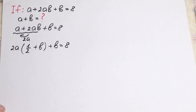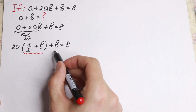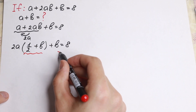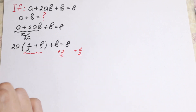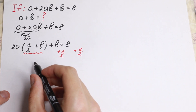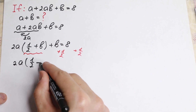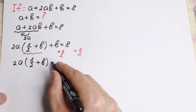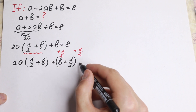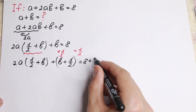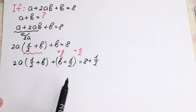Right here we will have one half plus b in this parenthesis, and right here we'll have only b. So if we add one half on the left hand side and one half on the right hand side, we will have a really good expression. We'll have 2a times (one half plus b), plus (b plus one half), equal to 8 plus one half. I just add one half on both sides. Nothing hard.